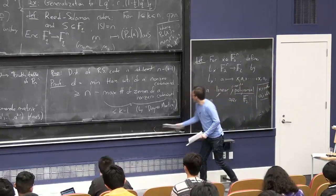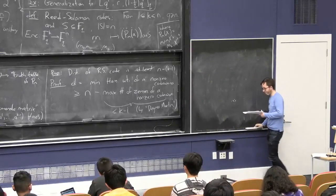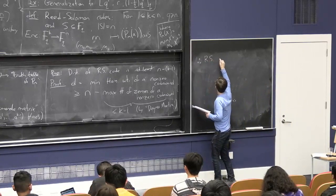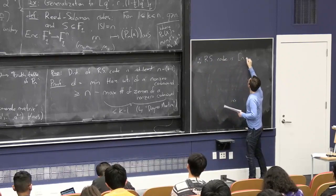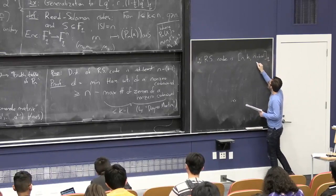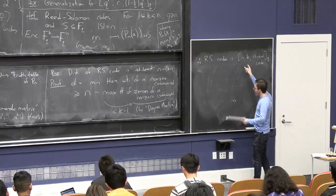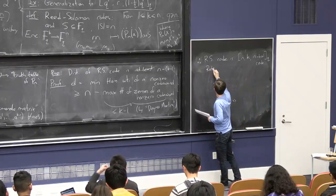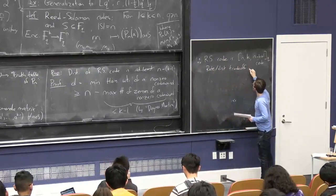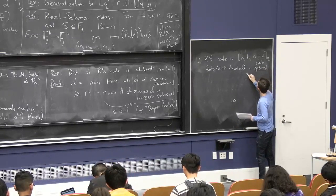So in summary, Reed-Solomon code is an n, k, n minus k plus 1, q code. And actually, this rate distance trade-off is the optimal possible trade-off assuming q is at least n.